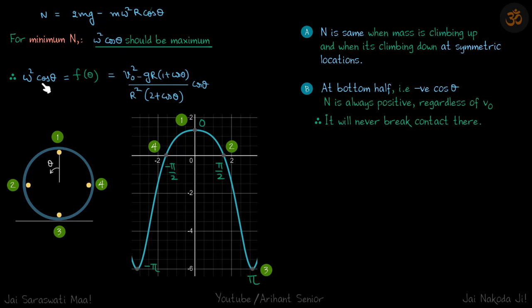Plotting ω²·cosθ as a function of theta, the curve has its maximum value at θ = 0 (the top). So when θ = 0 the normal reaction is minimum because ω²·cosθ is maximum. At θ = π and θ = −π, ω²·cosθ is minimum, so N is maximum there.